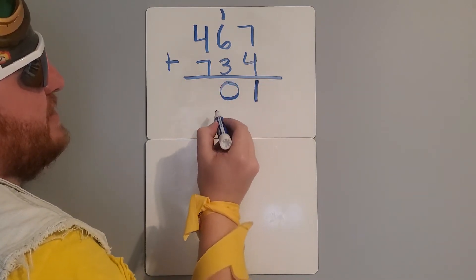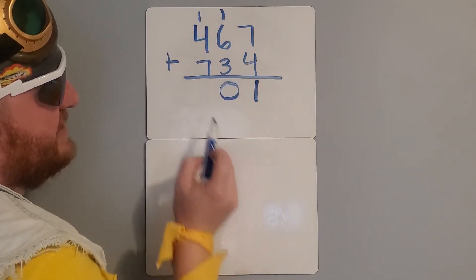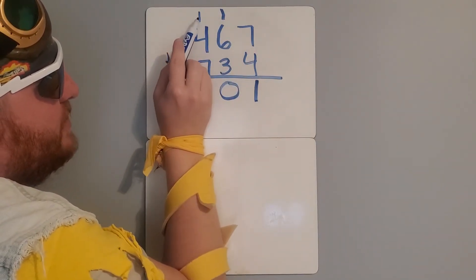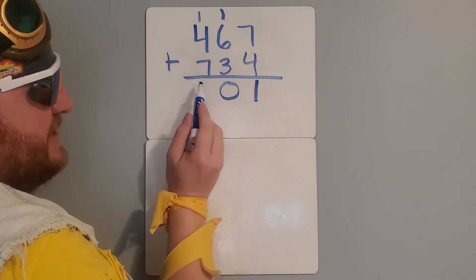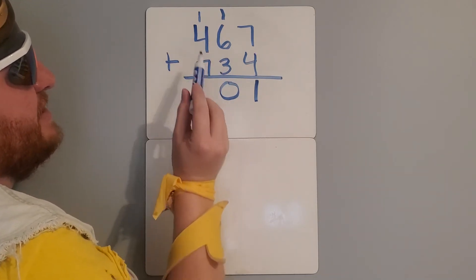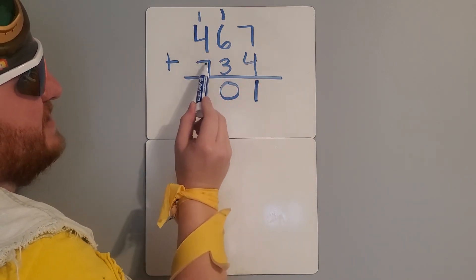So I'll put a 0 there, carry this up here. Now, since this one's in the hundreds place, I actually technically carried a 100 up here, because all these numbers here are in the hundreds place. So this is technically me adding 100 plus 400 plus 700.